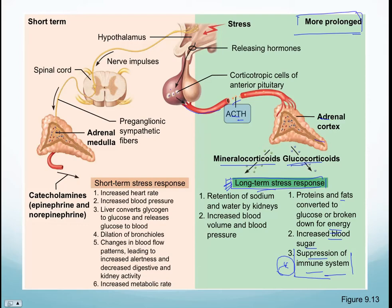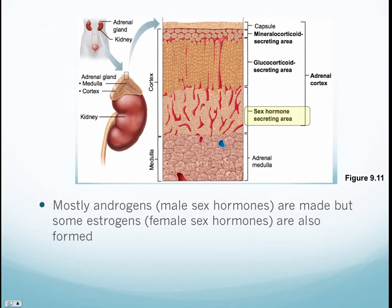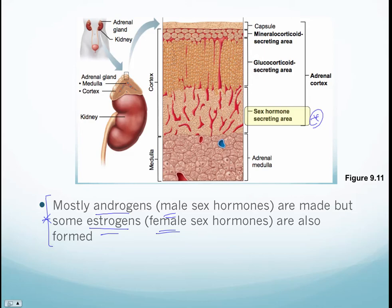Both glucocorticoids and mineralocorticoids work collectively during the long-term stress response. The next layer of the adrenal cortex is the sex hormone secreting area — mostly androgens secreted in males and estrogens in females. These effects are often masked because the ovaries and testes secrete progesterone, estrogen, and testosterone. However, these hormones also contribute to secondary sex characteristics such as deepening of the voice and maturation of female reproductive organs.